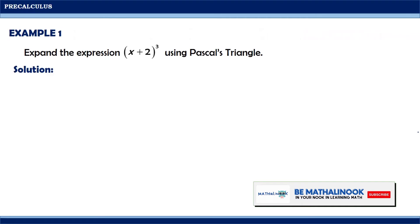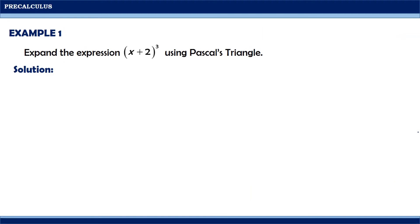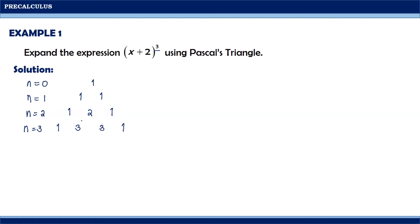Let us try to solve this example: expand the expression (x + 2)³ using Pascal's Triangle. The first thing we need to do is determine the numerical coefficients of the expansion. Since n equals 3, we build Pascal's Triangle: n=0 gives 1; n=1 gives 1, 1; n=2 gives 1, 2, 1; and n=3 gives 1, 3, 3, 1. We stop here since we have already reached the required exponent.